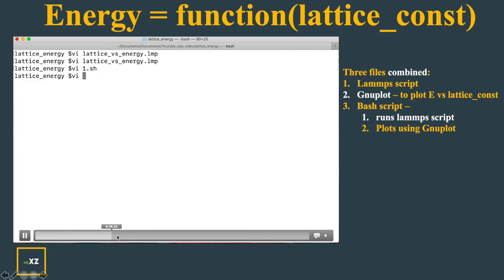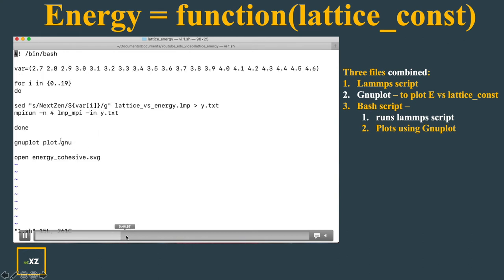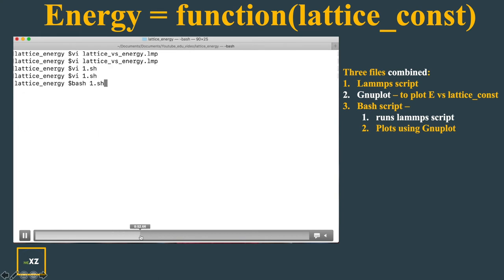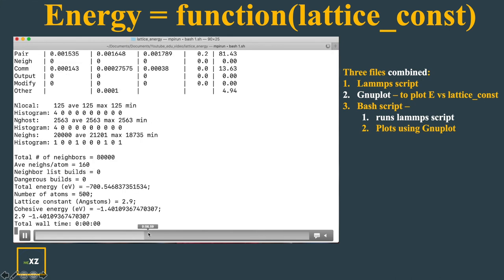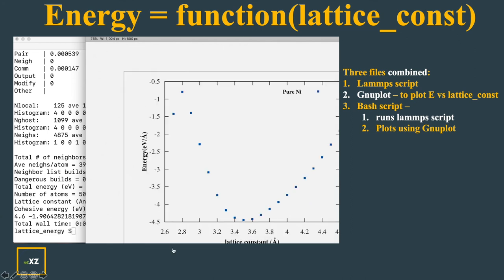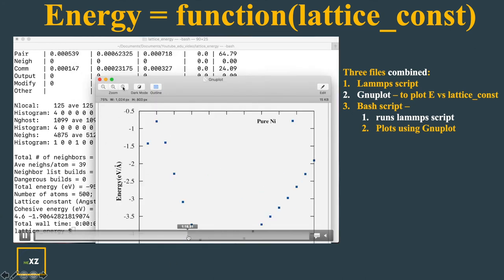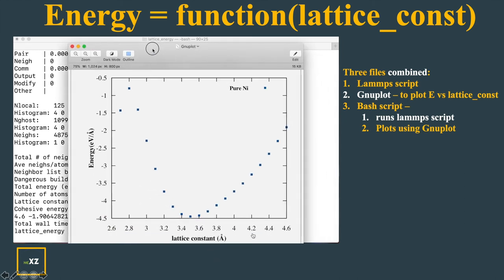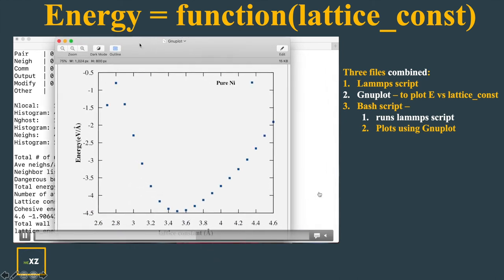Now let's go ahead and run the bash script using bash 1.sh. When you see, you can see all these lattice constants here and the energy of each atoms and this is the plot.